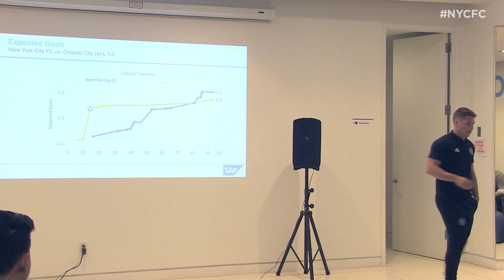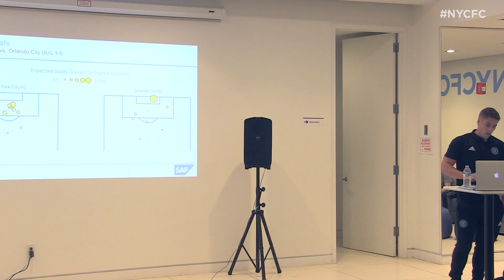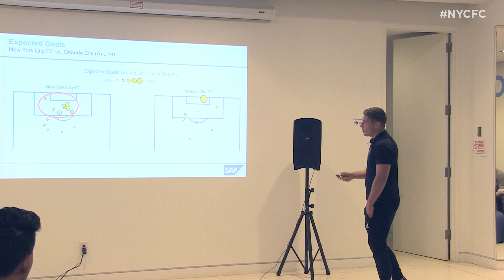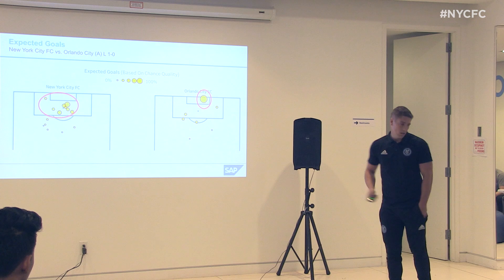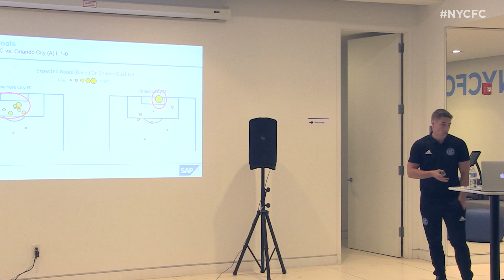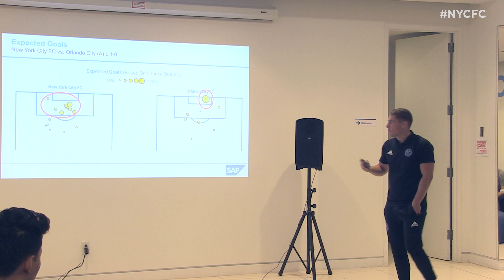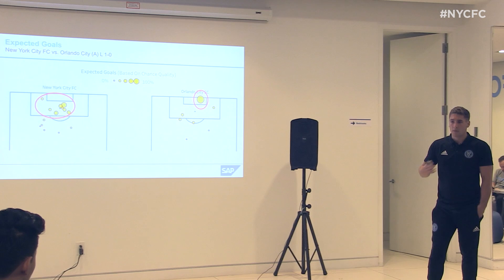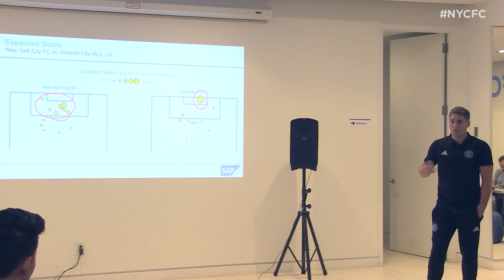Looking at shot locations relative to the zones: we had eight shots inside the box. One shot was in the blue zone (33% chance of scoring), three shots in the yellow zone (54% combined chance of scoring) — those two attempts combined give us roughly a one-goal expectation. We also had four shots in the red zone. Orlando had one high-quality chance. This tells us we created similar chances in certain areas but needs more detailed review to understand why we didn't score and how those chances were created.